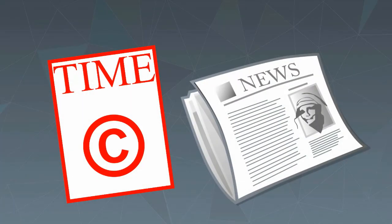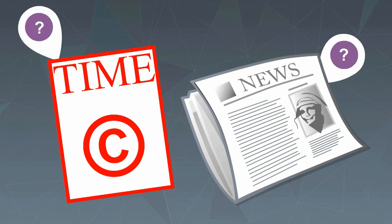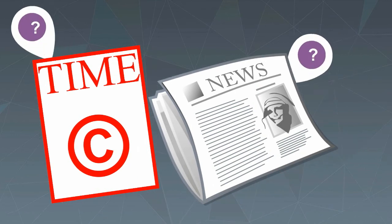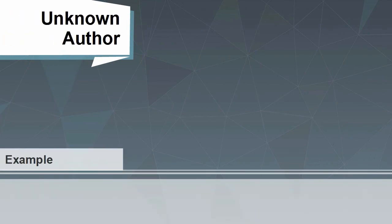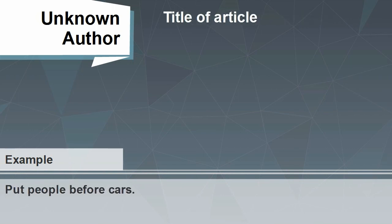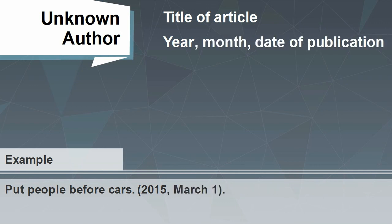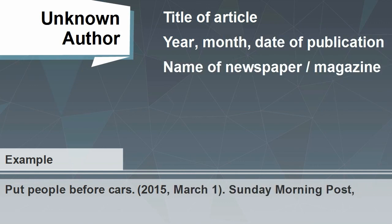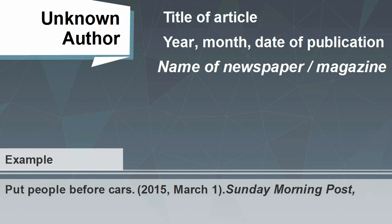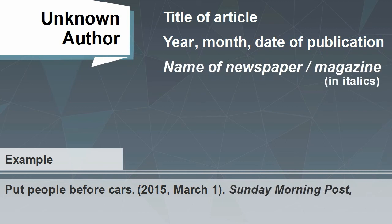How to reference newspaper or magazine articles with no author given. Sometimes you'll come across a newspaper or magazine article in print or online where the author's name is not given. In this case, you give the title of the article, the year, month and date of publication, the name of the newspaper or magazine in italics, and the page numbers.